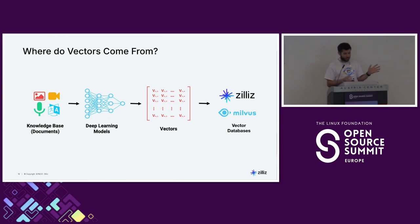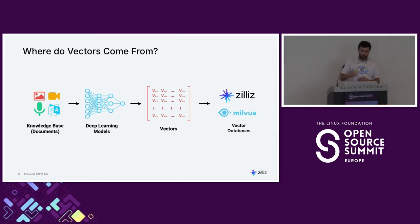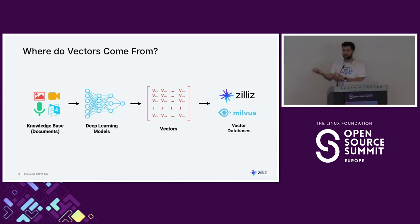For those not familiar — where do vectors come from? You have your documents, your knowledge base, images, text, videos — everything. You put that through a deep learning model, and you cut off the last layer. Usually a deep learning model gives you a prediction, like 'there's a cat in this picture.' You don't want that — you care about what the model has learned. That's why you cut off the last layer: at that point the model tells you everything it has learned. That's how you get the vectors, and then you store those directly in your vector database.